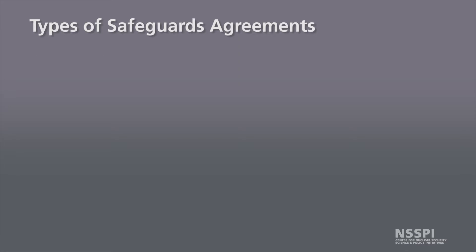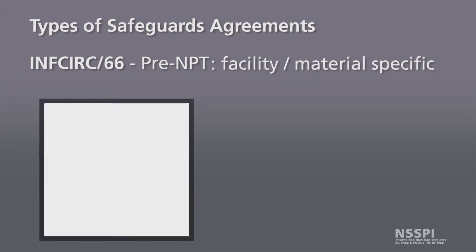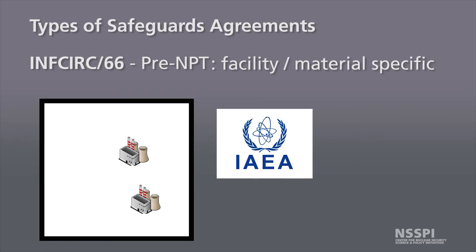These agreements can come in various types. The first being INFCIRC/66, an arrangement developed prior to the NPT, and it is facility and material specific. Looking at our fictional sovereign state with two nuclear facilities, with an INFCIRC/66 type safeguards agreement, safeguards could be applied to one facility but not necessarily the other. This agreement would only allow the IAEA access to the materials and activities at that one specific facility.